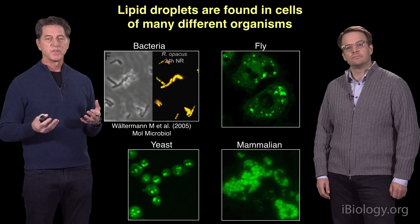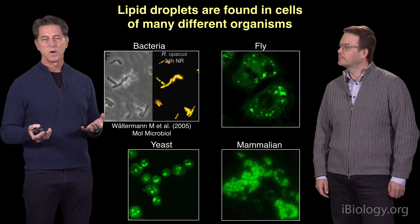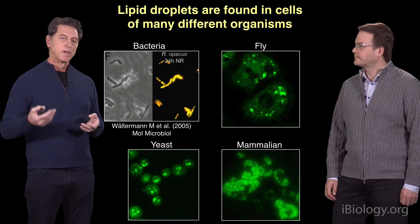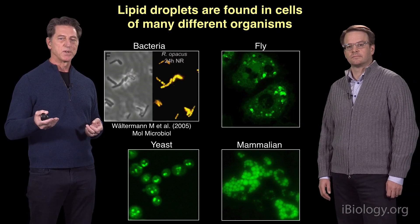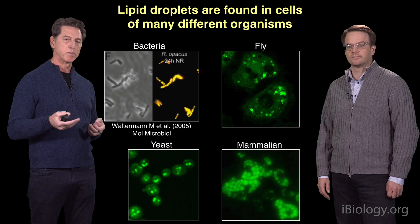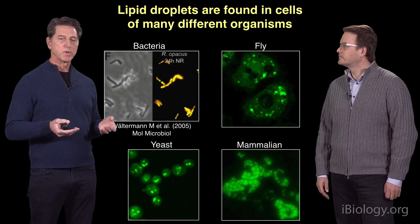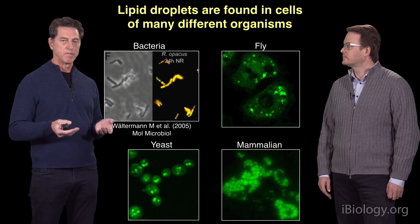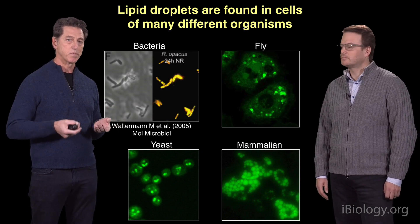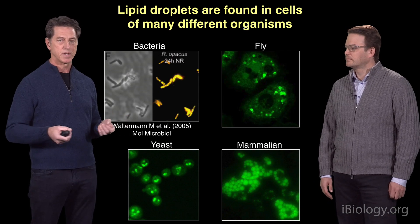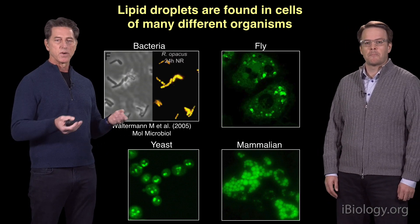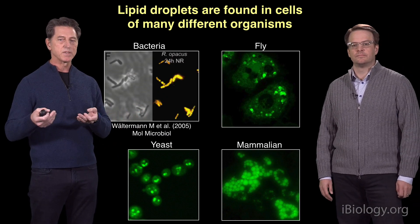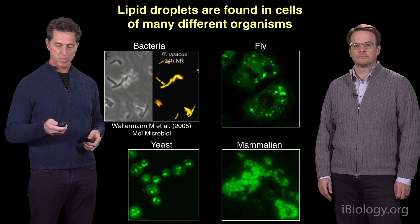Lipid droplets are ubiquitous — found in almost all eukaryotic cells, and even in some prokaryotes. Here we visualize lipid droplets in different cell types using a neutral lipid fluorescent dye such as BODIPY. Some bacteria have lipid droplets — in this case Rhodococcus, but also mycobacteria. Also shown are yeast cells with their typical 4 to 8 lipid droplets, fly cells with lipid droplets, and mammalian cells with lipid droplets.